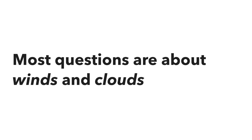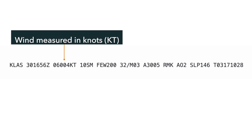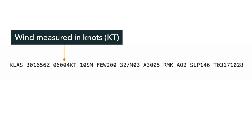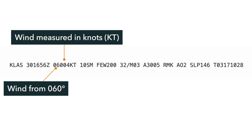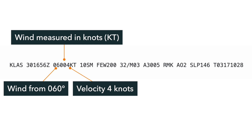Most of the questions on the remote pilot test are going to deal with wind and clouds. The wind block has KT at the end — that stands for knots. Wind is the only thing where we're measuring a velocity in these weather reports, so when you see knots, that's the wind. The first three digits are the direction the wind is coming from, and then after that you have the speed in knots.